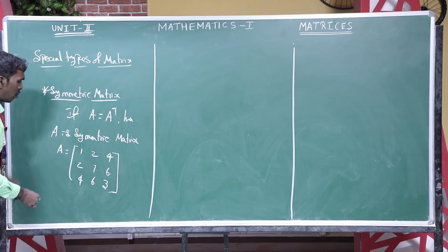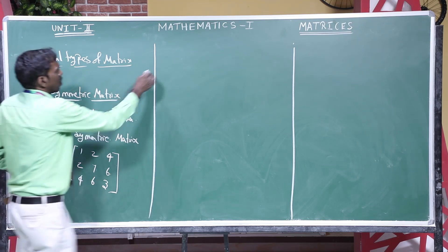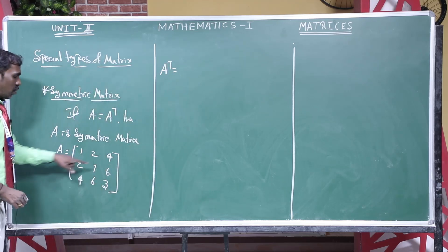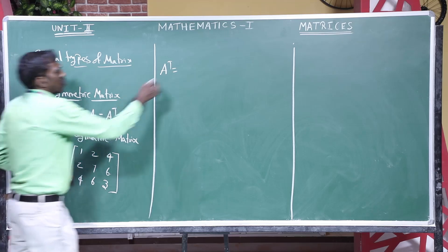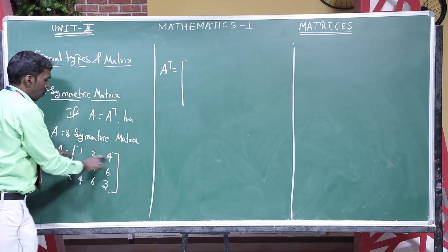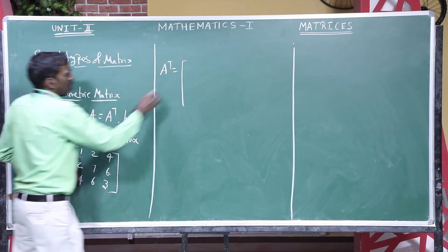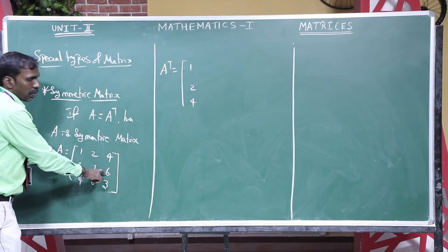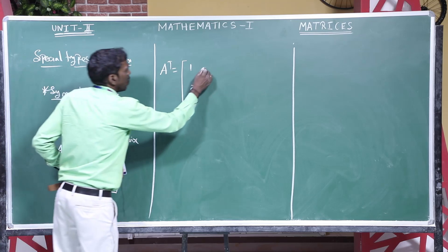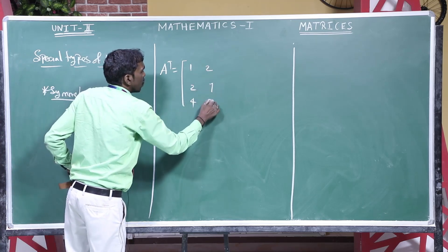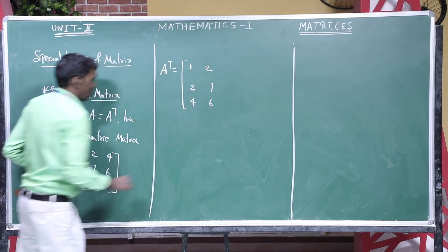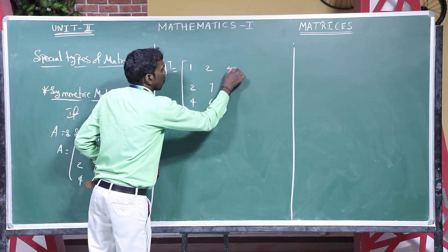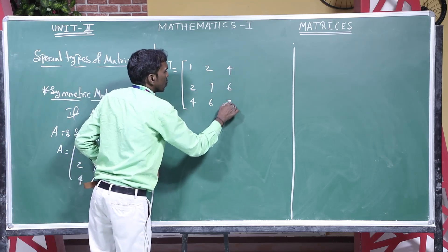I can take the transpose of this element. To find the transpose, make each row into a column. So the first row 1, 2, 4 becomes the first column. The second row 2, 7, 6 becomes the second column. The third row 4, 6, 3 becomes the third column: 4, 6, 3.